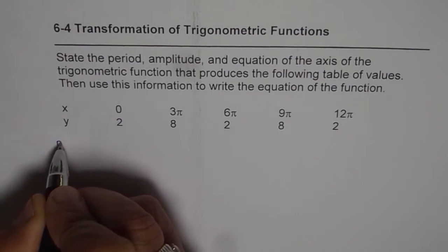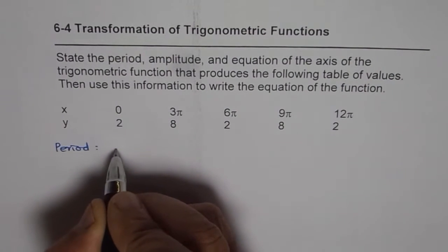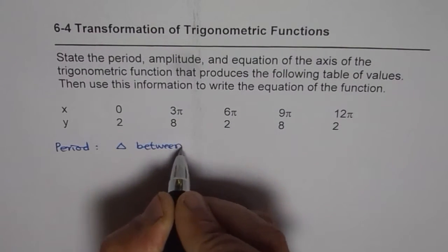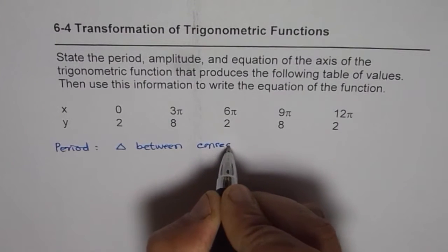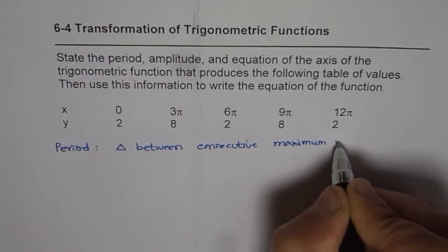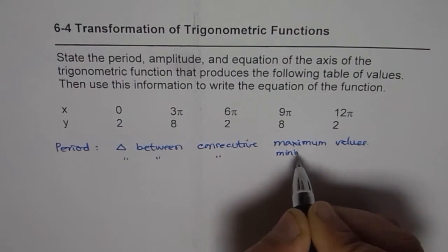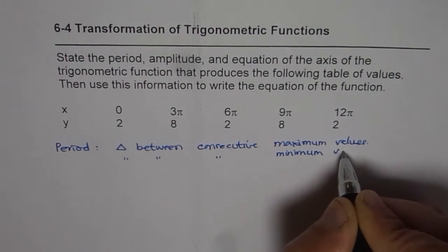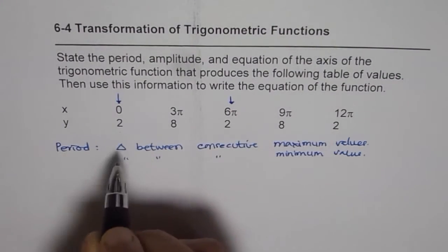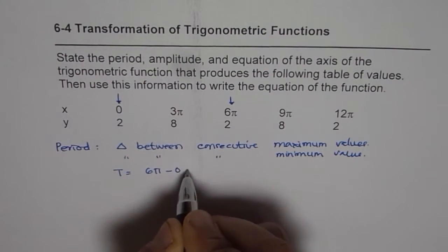What is the period for a trigonometric function? It is the difference between two consecutive maxima or two consecutive minima—the difference between consecutive peaks. In this case, looking at the x values where we have two minimum values, the time period T is 6π minus 0, which equals 6π.